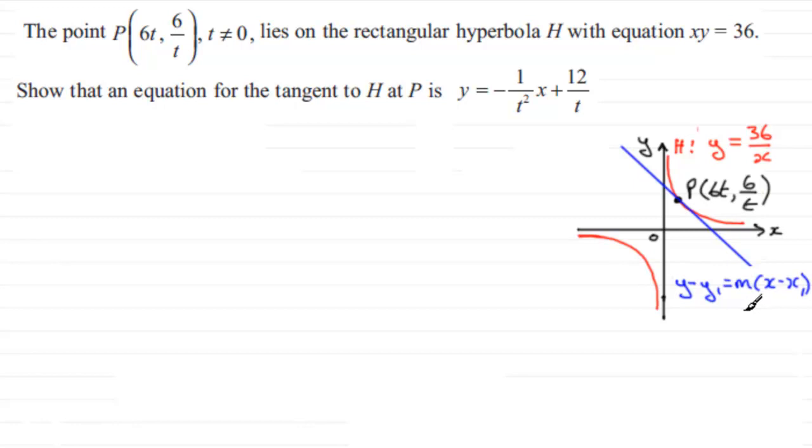We can do that by differentiating the equation of the curve with respect to x. We have y equals 36 over x. To get it ready for differentiating, we can think of this as 36 times x to the power minus 1.